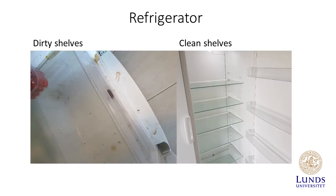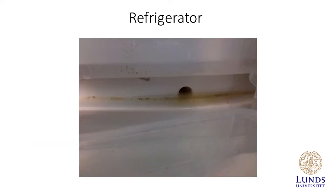Refrigerator: to the left you see dirty refrigerator shelves with brown stains; to the right is an example of clean shelves. The refrigerator can be challenging to clean especially in a common area. The best way to do it is to temporarily move out all the food and clean all surfaces inside the refrigerator. The drain in the refrigerator also needs to be cleaned — as shown in this picture, the drain can clog and brown water can start gathering. You can use a chopstick to clean out any mold or similar that is blocking the drain.